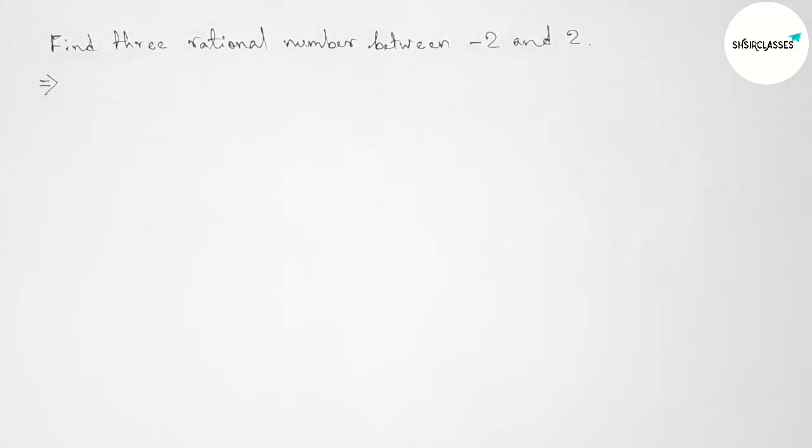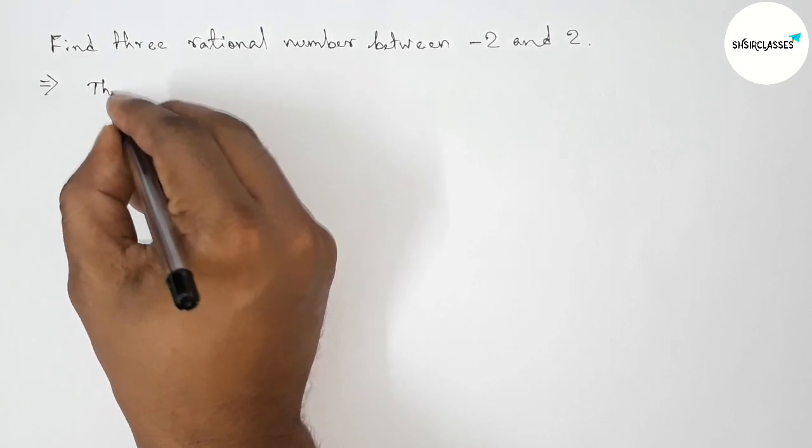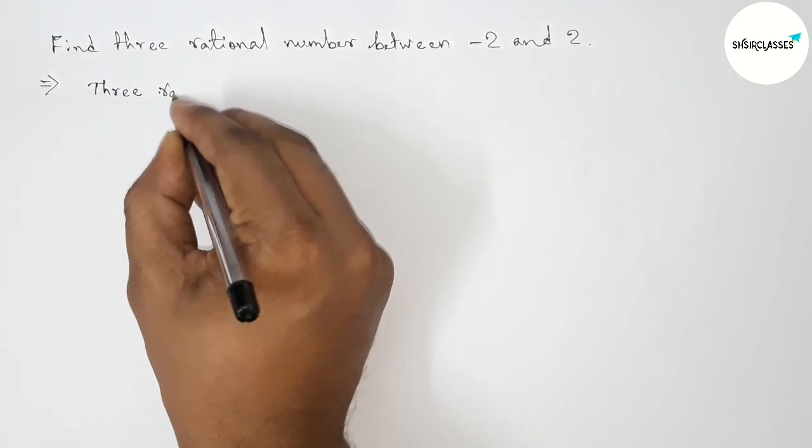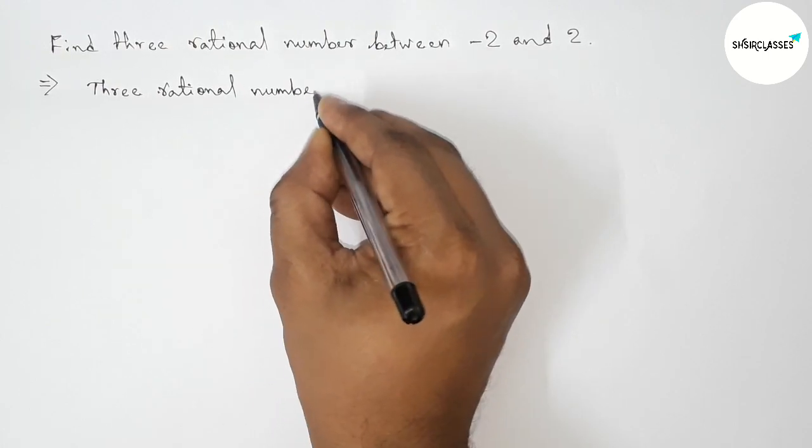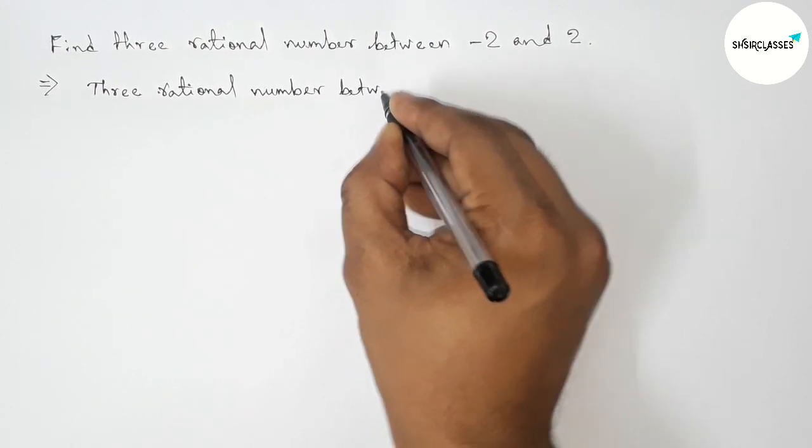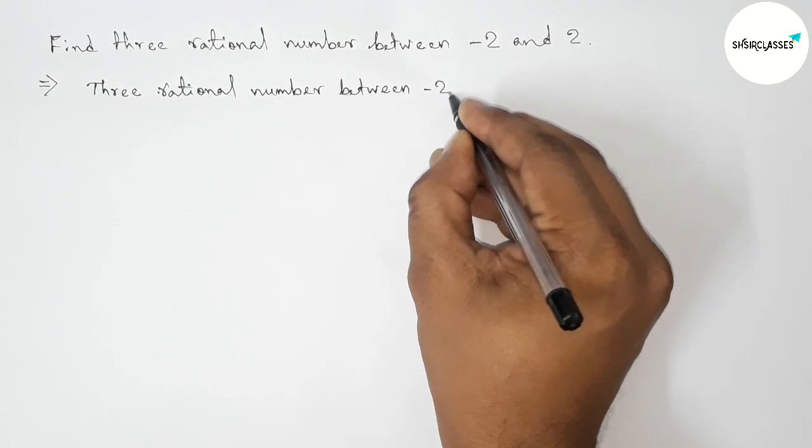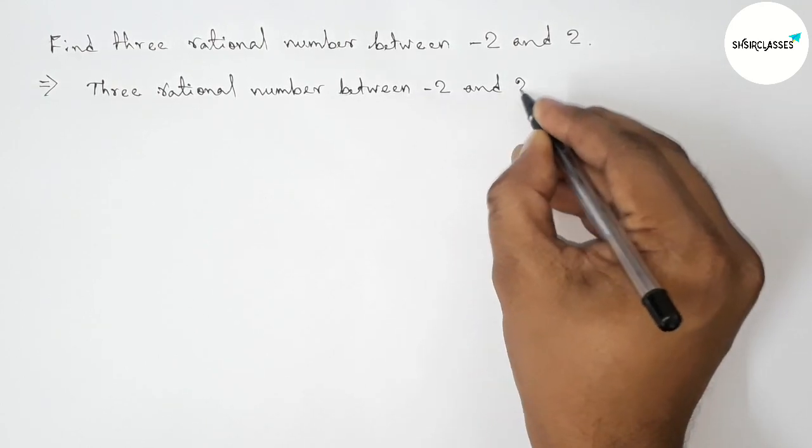First of all, let us solve this problem. So here between minus two and two we can get many rational numbers, but we have to find only three rational numbers. So the three required rational numbers between minus two and two are: